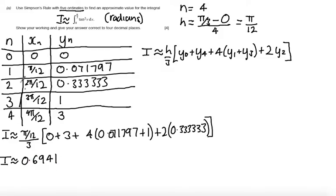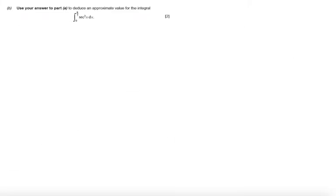So let's have a look at part b. Part b says use part a to deduce an approximate value for the integral 0 to π/3 of sec squared x dx. So somehow I want to use tan squared and what I'm going to do to link sec squared to tan squared is that I know 1 plus tan squared x is equal to sec squared x.